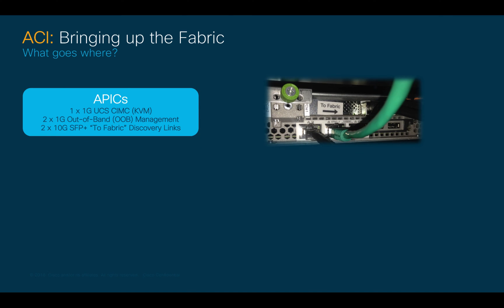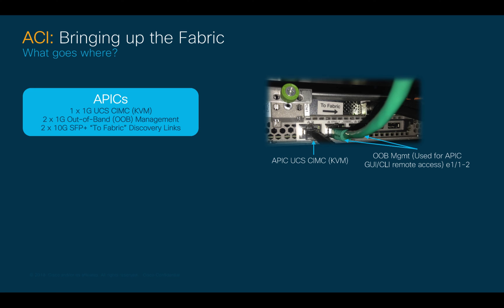Let's start by cabling the physical APEC server or servers. Each of them will have three different connections. One is the UCS CIMC port, which will allow you direct KVM-over-IP access to the UCS server itself — this port has the letter M on top of it. Then we have two out-of-band management ports, which will be used to access the APIC GUI or CLI, where you will manage your whole ACI fabric from. If you have a dedicated out-of-band network, you can connect both the CIMC and out-of-band management ports there.